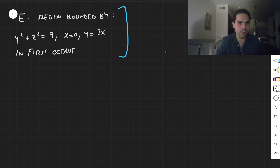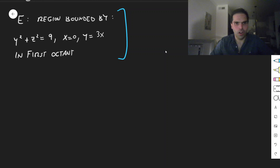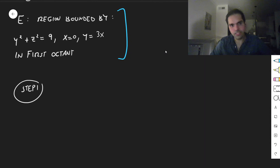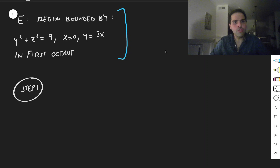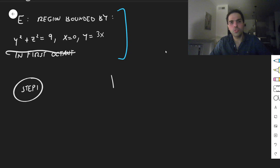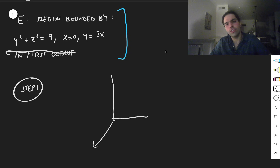So in particular, let's first draw this region — let's do the hard part first. First of all, the first octant just means everything is positive, so you don't have to worry too much about it. So this is x, y, z.